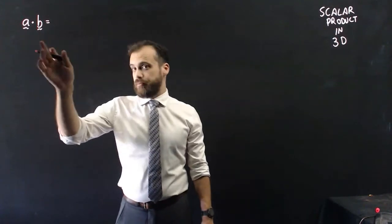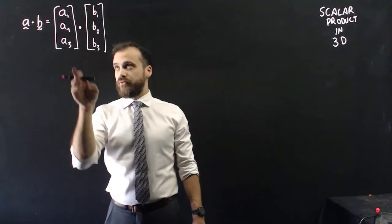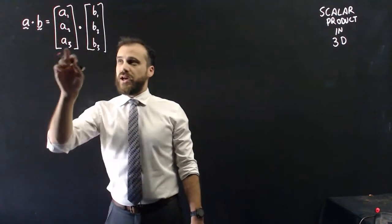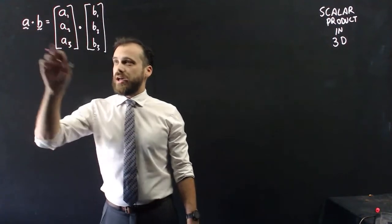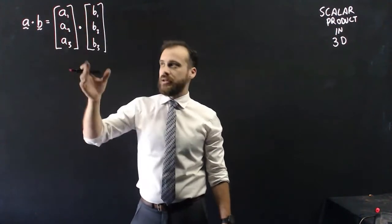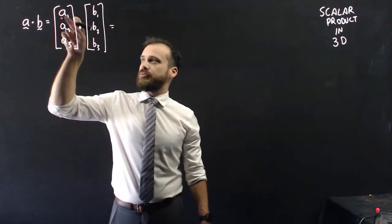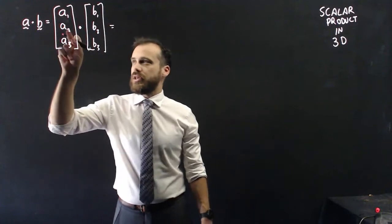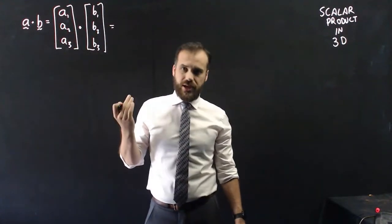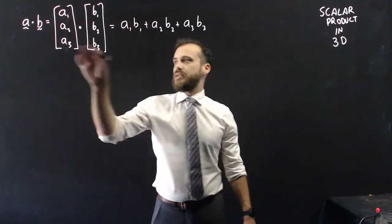So if I'm doing A dot B, I can write that in a different way — I can write it as column vectors. A1 is the I component of A, the J component of A, and the K component of A, and similarly for B. To find the dot product, I multiply the I components by each other, the J components, and the K components, and add them together.